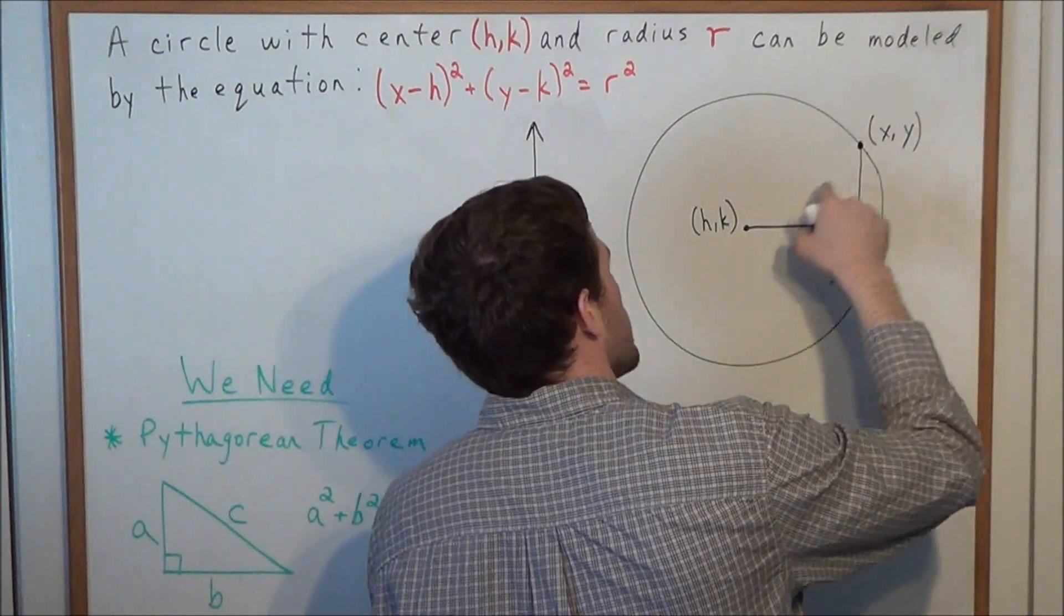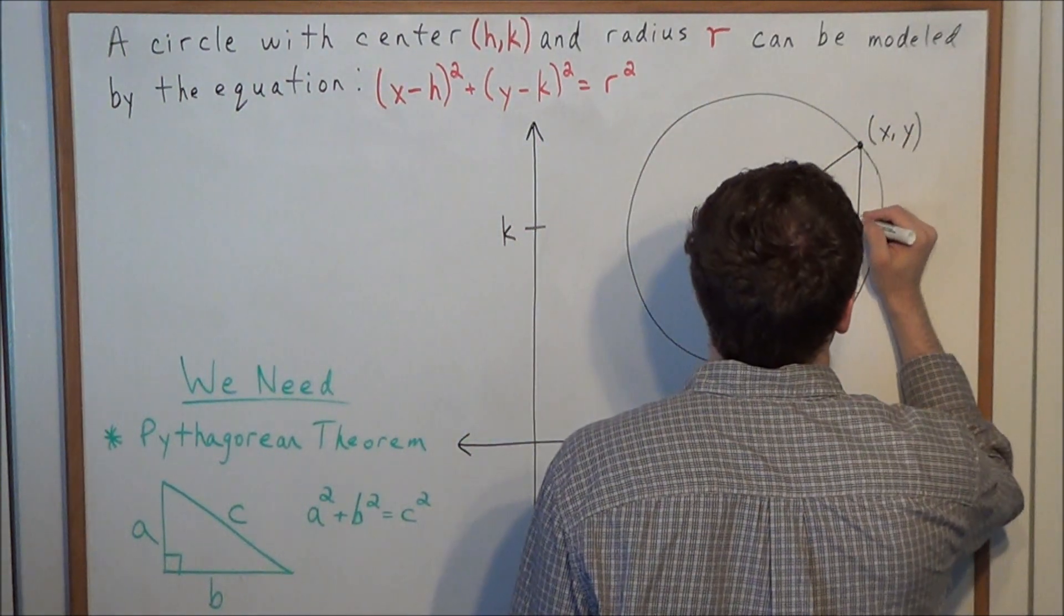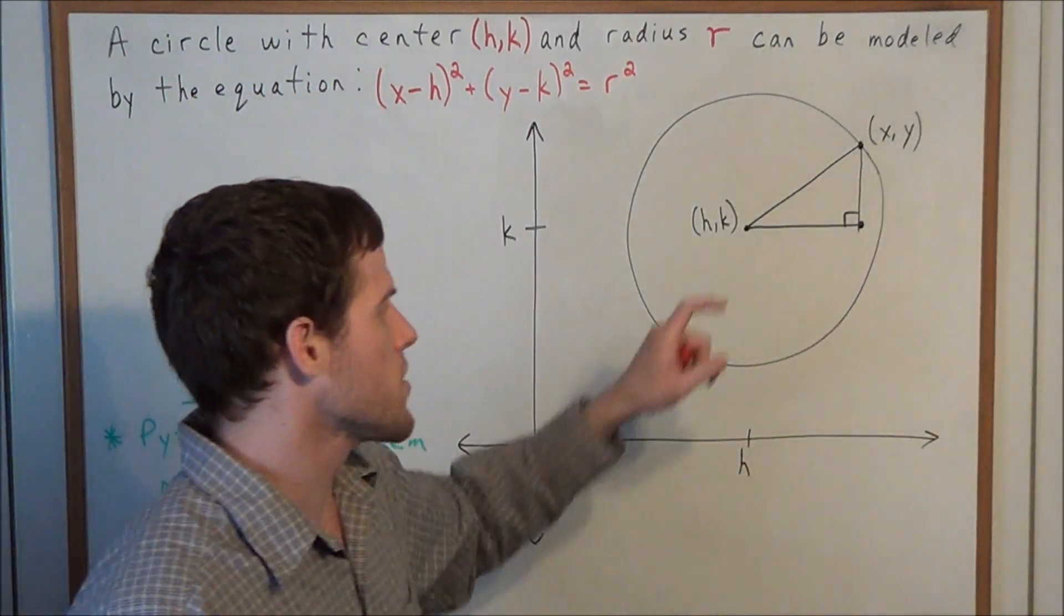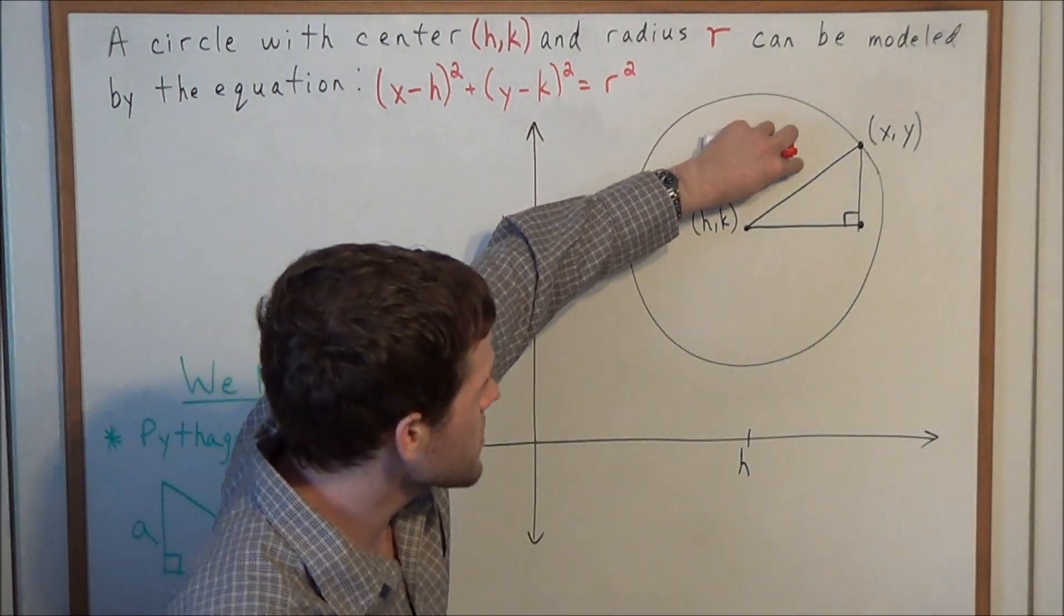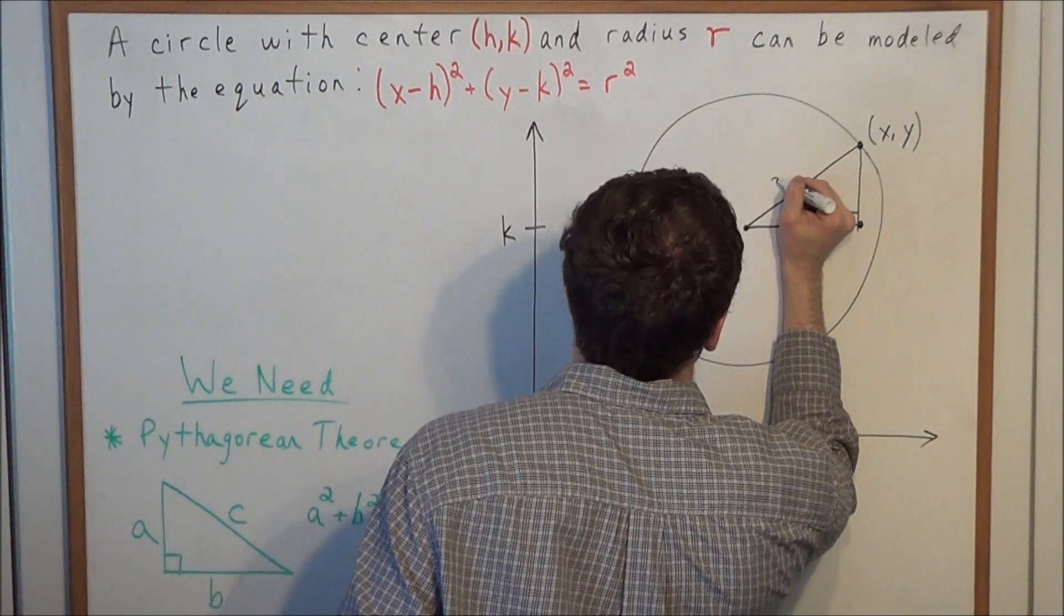And now when I connect (h,k) to (x,y) I have a right triangle. So now let's think of the dimensions of this right triangle. We have this distance here we could call r, where r represents the radius of the circle.